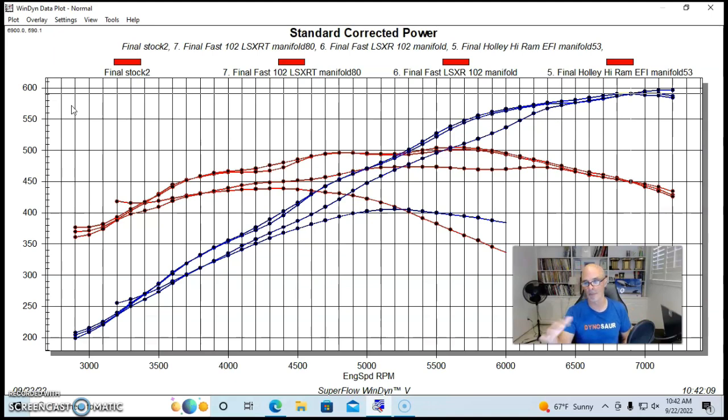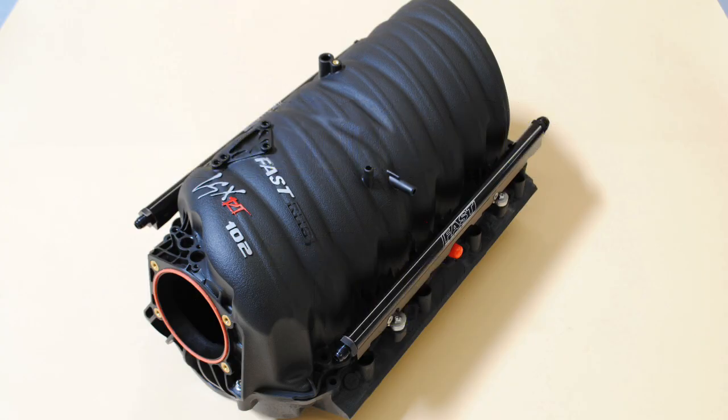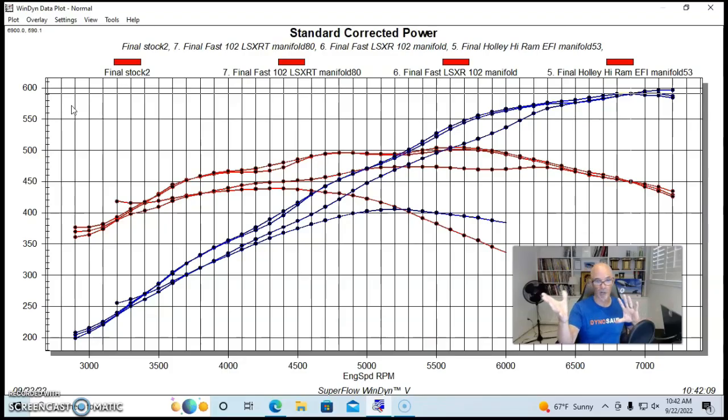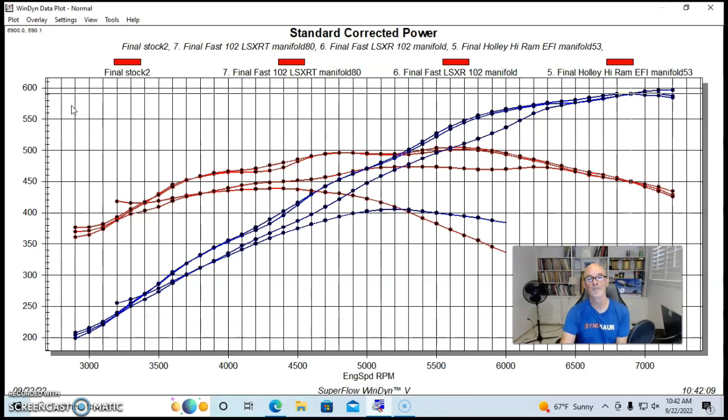But those two intake manifolds, I just want to show you, are the same. And a long runner manifold in this RPM range is probably also a better choice than the short runner Hi-Ram stuff, although the Hi-Ram did make the most peak power. So if peak power is the thing you're looking for, a short runner manifold is the way to go. If not, if you're looking for more average power, than a long runner Fast. But we did manage to just miss making 100 horsepower per liter. Let's get to our conclusion.